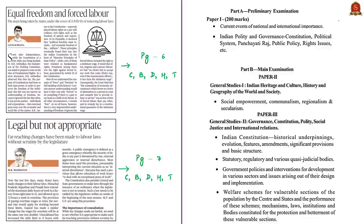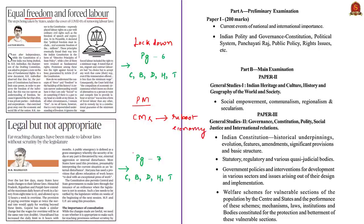This editorial is about equal freedom and forced labor. As we know, India is now in lockdown 3.0, which is slated to end on 17th May. In the recent conference held by the Prime Minister of India with state chief ministers, some chief ministers suggested measures to reboot the economy. In terms of rebooting the economy, many state governments are actively announcing ordinances issued by governors to amend land and labor laws.